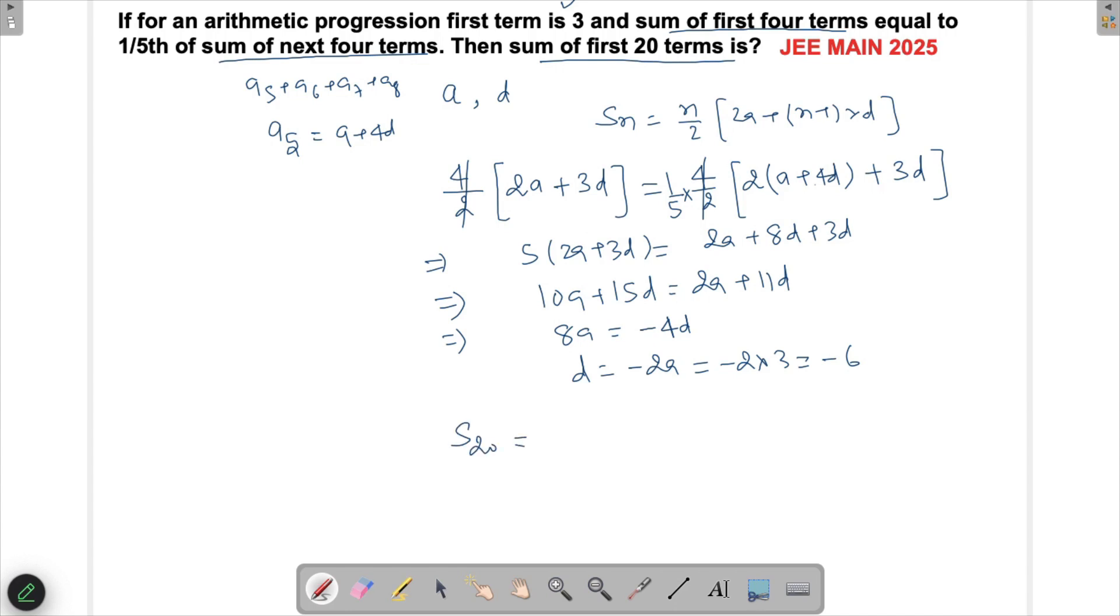S20 = 20/2 times [2(3) + 19(-6)] = 10 times [6 + 19(-6)].